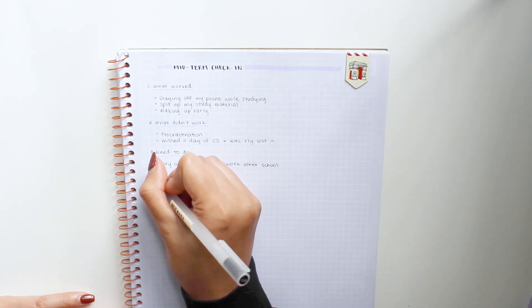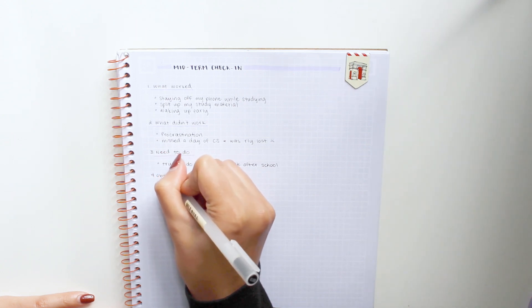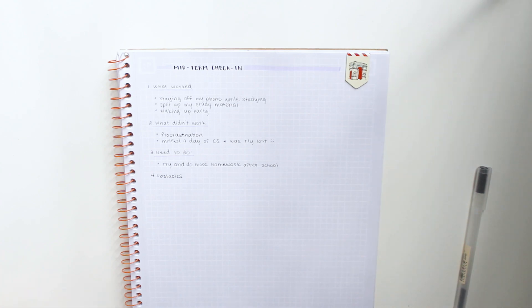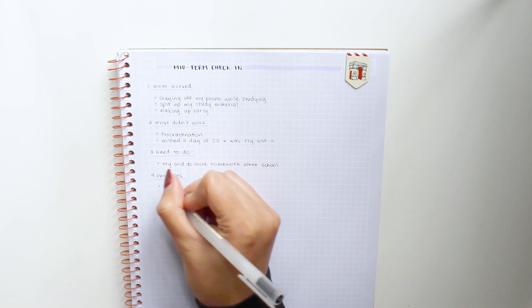After that, write down some of the obstacles you might experience while trying to do that thing, and write down ways to work around those obstacles. For example, if you said you needed to start procrastinating less, maybe one of your obstacles is that every time you get home you're too tired to do any homework.